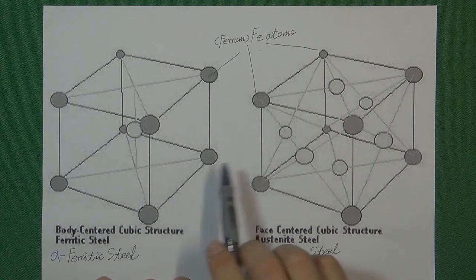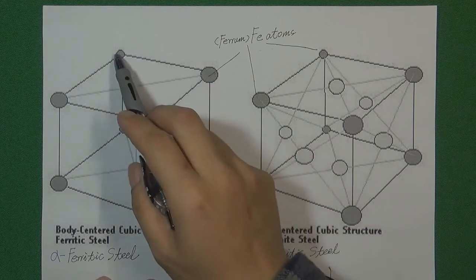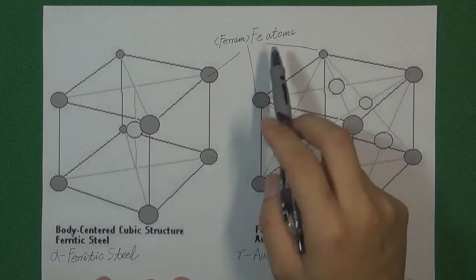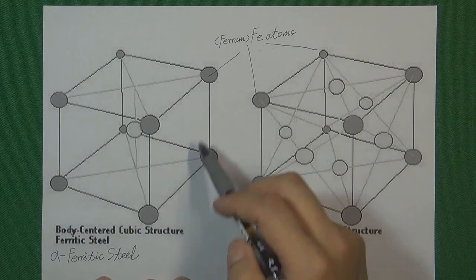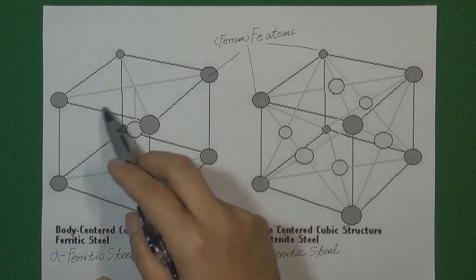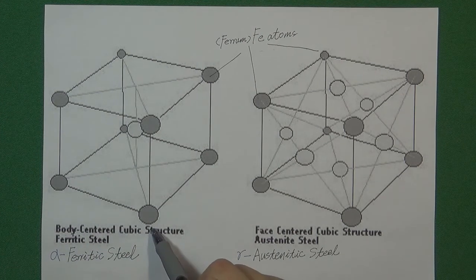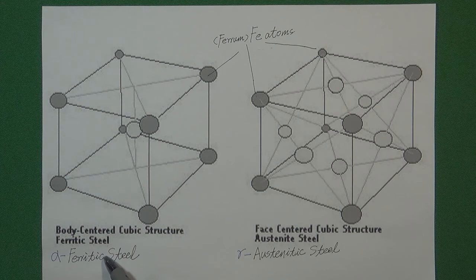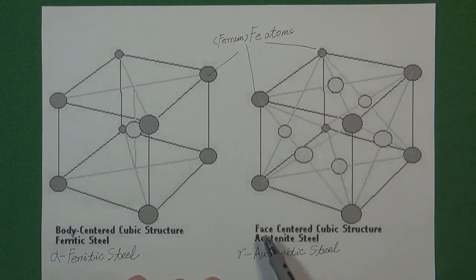We need to understand how iron atoms combine with each other to make a structure. Commonly we have two kinds of structures inside steel. First, called a body-centered cubic structure. From this picture, all those small dots represent an atom. This one is called a body-centered cubic structure — that means this cubic has one atom in the center. This kind of structure we call a body-centered cubic structure, and the scientific name is ferritic. We use alpha to represent this kind of structure.